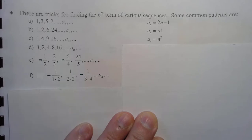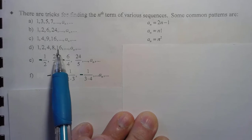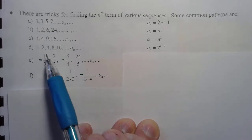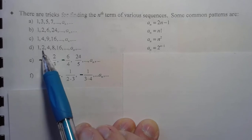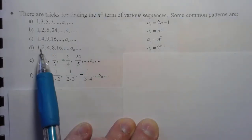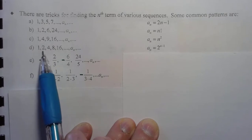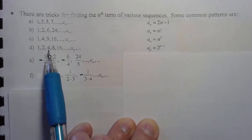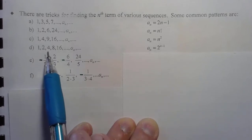What about this one? Looks like I'm multiplying by 2, so that's going to be 2 to the n minus 1. My first term: 2 to the 1 minus 1 is 2 to the 0, which is 1. My second term: 2 to the 2 minus 1 is 2 to the 1, which is 2. My third term: 2 to the 3 minus 1 is 2 squared, which is 4. That worked.